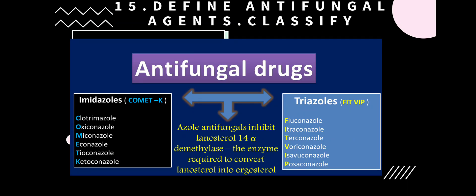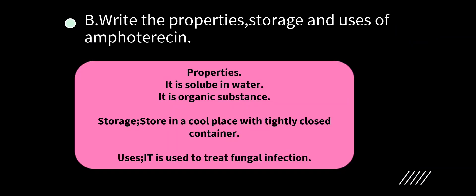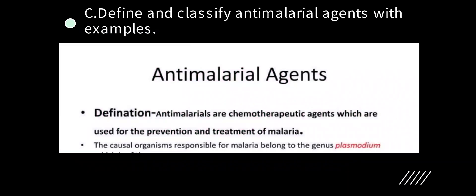Define antifungal agents. Antifungal drugs are drugs used to treat fungal infections caused by yeasts. Classification — imidazoles: clotrimazole, oxyconazole, miconazole; triazoles: fluconazole, triconazole, voriconazole, oriconazole. Properties and storage of amphotericin: it is soluble in water, is an organic substance, and should be stored in a cool place in a tightly closed container. It is used to treat fungal infections.